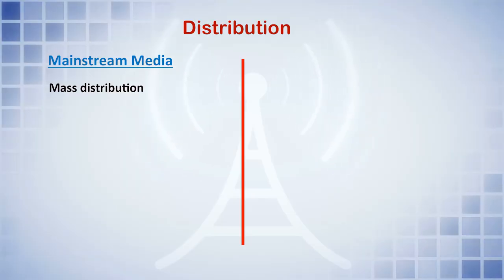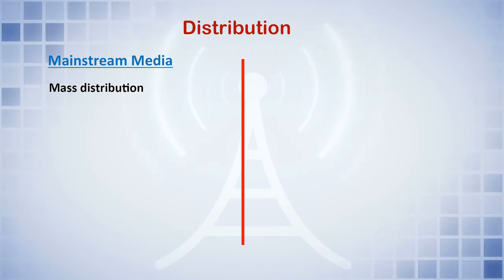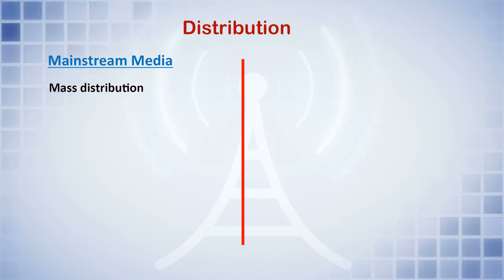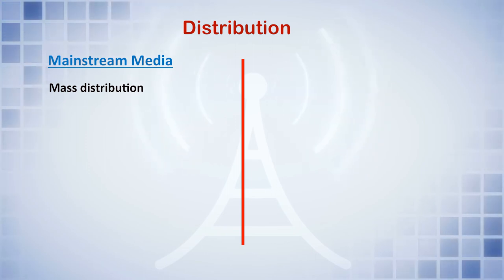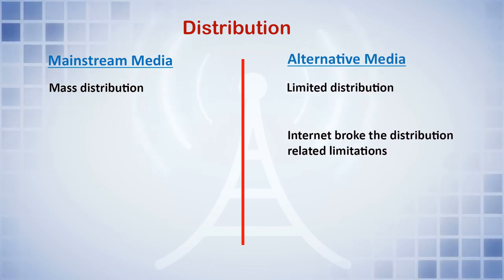In the area of distribution, mainstream media has mass distribution because it is mass media — millions and millions of viewers, readers, newspaper circulations, and website hits. In the case of alternative media, distribution is limited. A community newspaper may be distributed only within some villages, a few blocks, or one district.